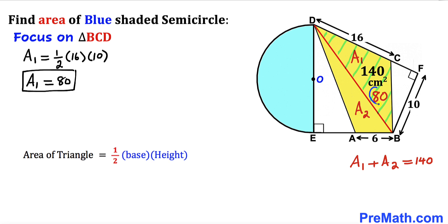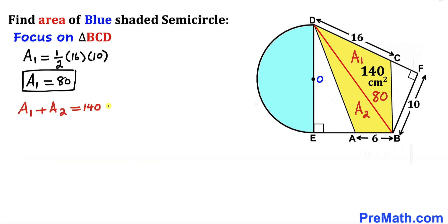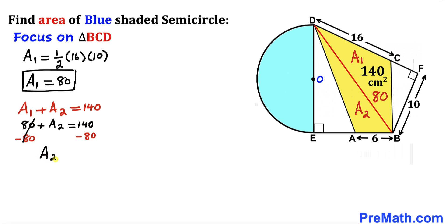We know the sum a_sub_1 plus a_sub_2 equals 140, and a_sub_1 is 80. So 80 plus a_sub_2 equals 140. Subtracting 80 from both sides, our area a_sub_2 turns out to be 60 centimeters square.